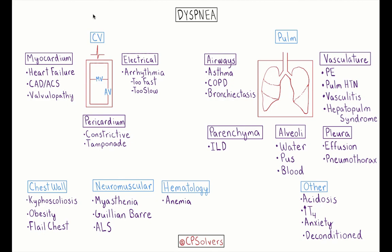Let's get started with cardiovascular causes of dyspnea. Within this cardiovascular bucket, we have the myocardium — examples being heart failure, coronary artery disease or acute coronary syndrome, and valvulopathy such as aortic stenosis or mitral regurgitation. This category is typically associated with impaired ability of the ventricle to either fill or eject blood. Next, we have the pericardium, with examples being constrictive pericarditis or tamponade, where increased pulmonary vascular pressures typically leads to dyspnea.